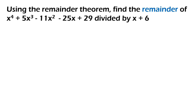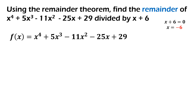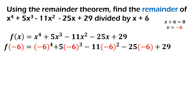Let's have our last example. Using the remainder theorem, find the remainder of the polynomial x raised to 4 plus 5x cubed minus 11x squared minus 25x plus 29 divided by x plus 6. First step is to look for the value of x using the divisor. x plus 6, equate that to 0 and then transpose positive 6. x will be equal to negative 6. In the polynomial function, replace all x with negative 6. Then, solve muna natin lahat ng may exponents.